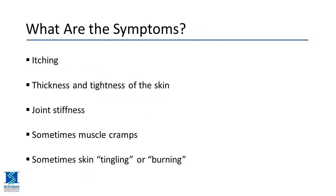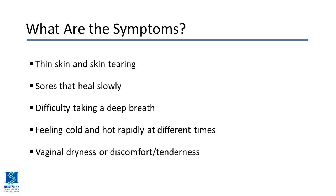Symptoms of chronic GVHD of the skin include itching, thickness and tightness of the skin, joint stiffness, muscle cramps from tight fascia and tissue, and tingling, burning, or lancing pain because the nerves are affected. As it progresses, the skin can get very thin, and steroids also contribute to thin skin and tearing.